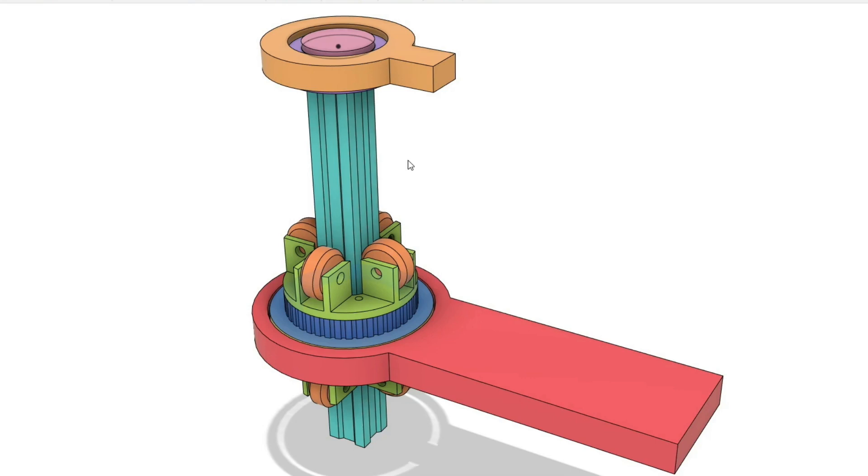There are some special bearings for this, called rotary spline bearings, but I can't find any that are small enough or affordable or even what the price are, which means that they're too expensive. If you know of any other mechanisms that allow this rotary and linear motion, I'd love to hear them.